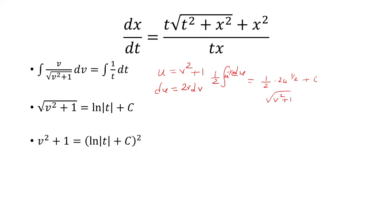In order to eliminate the square root, you have to square both sides. We're going to subtract 1 and then square root both sides. And that is v.